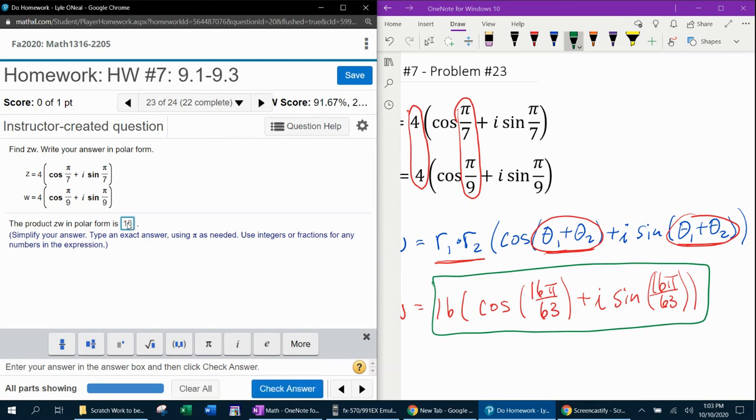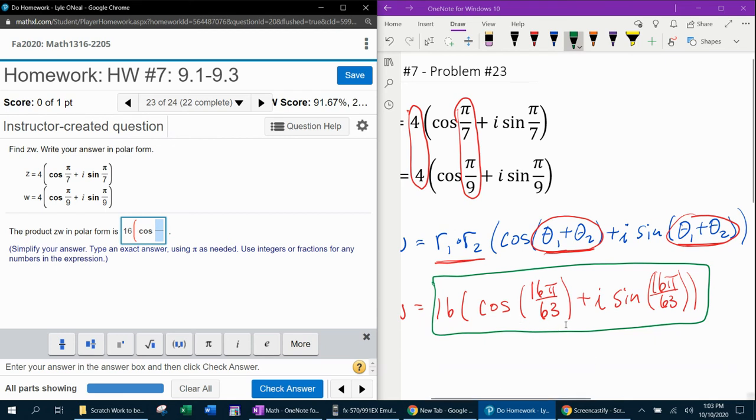And now let's see if we can input this into MyLabMath correctly. 16 parentheses, cosine of, and I think these parentheses may be optional. Let's see here. 16 pi over 63 plus i from the keyboard, sine of 16 pi over 63. And don't forget that closed parentheses at the back.